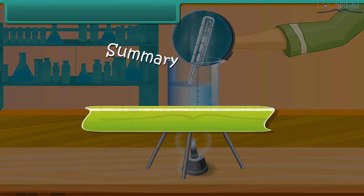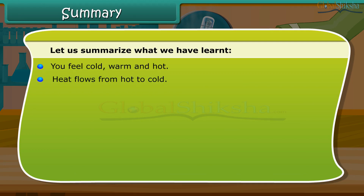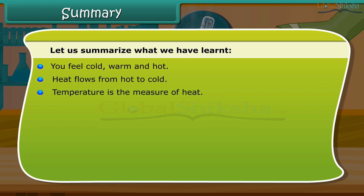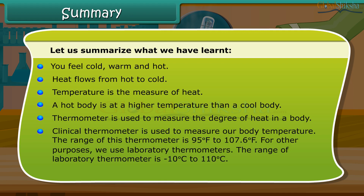Summary: You feel cold, warm and hot. Heat flows from hot to cold. Temperature is the measure of heat. A hot body is at a higher temperature than a cool body. A thermometer is used to measure the degree of heat in a body. A clinical thermometer is used to measure body temperature; its range is 95°F to 107.6°F. For other purposes we use laboratory thermometers; the range of a laboratory thermometer is minus 10°C to 110°C. The normal temperature of the human body is 98.6°F.